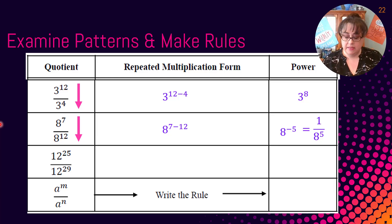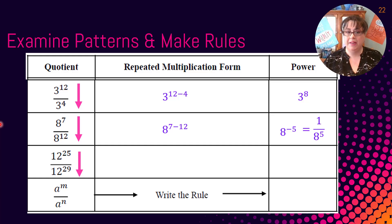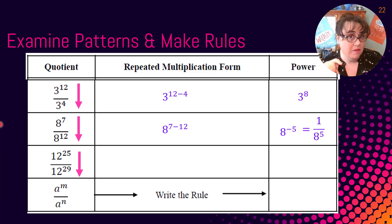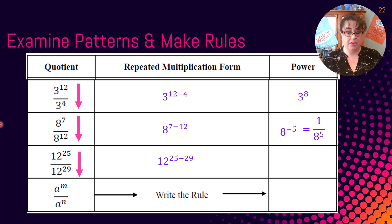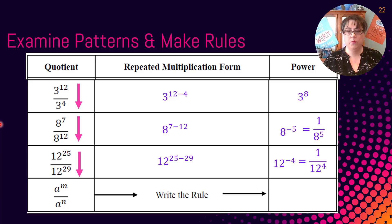The last one: 12 to the 25th over 12 to the 29th. Again, we have more in the denominator, so we expect a fractional answer. We get 12 to the 25 minus 29, which is 12 to the negative four, rewritten as one over 12 to the fourth.